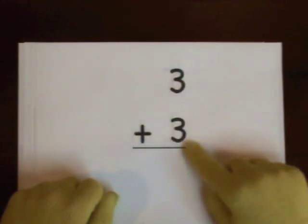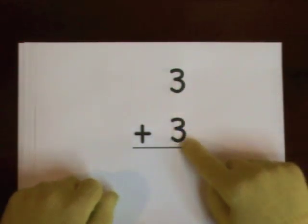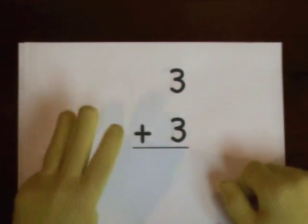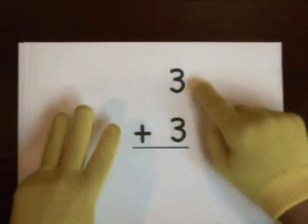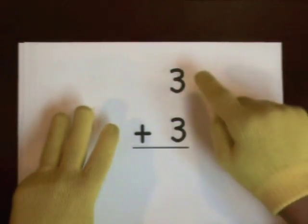3 plus 3. We'll start at this 3. Do this 3 on our fingers. 1, 2, 3. I'll count up to this 3. You need to count the rest of the way. 1, 2, 3.